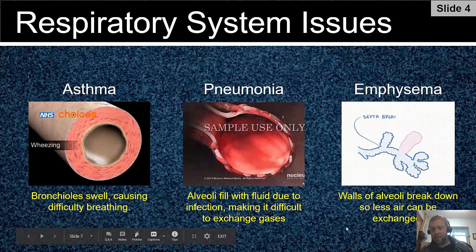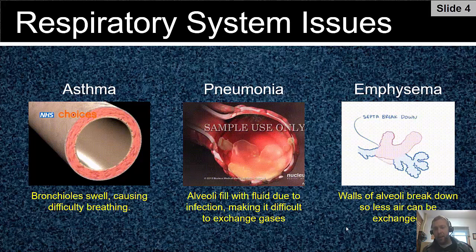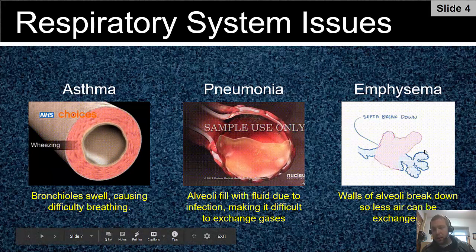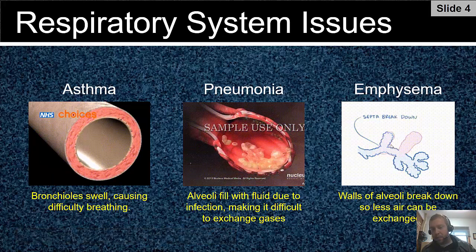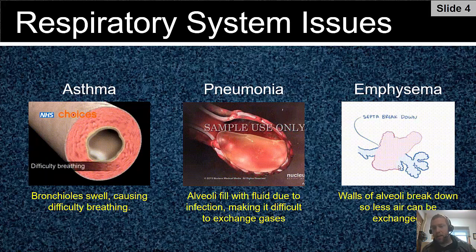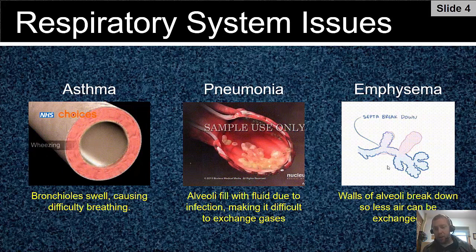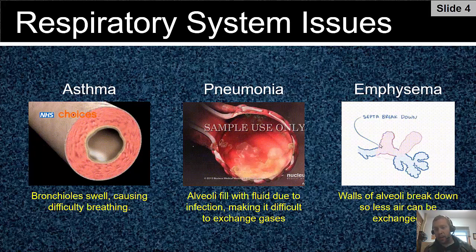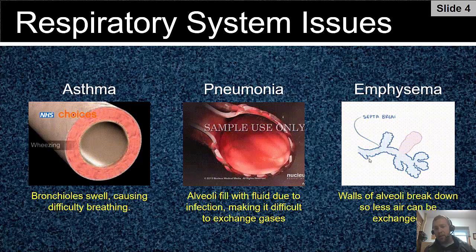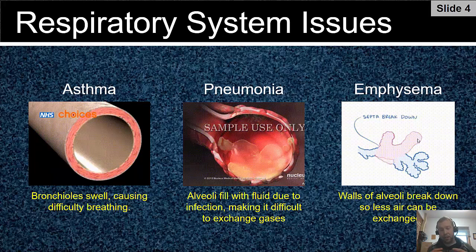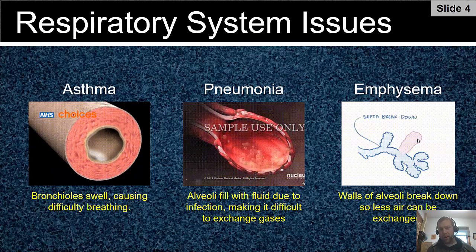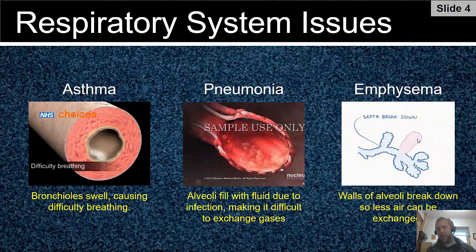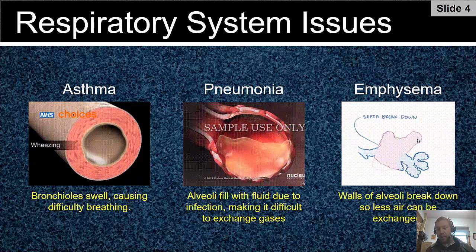The last one is emphysema — less common, but it can happen later in life, often with people who smoke. The walls of your alveoli break down. A healthy alveolus has many small branches with lots of surface area, but when the walls break down from smoking, you get a bigger but fewer alveoli, losing that surface area. Less surface area means less oxygen can be transported to your blood vessels and cells. That's why people who smoked early in life may have difficulty breathing later on.